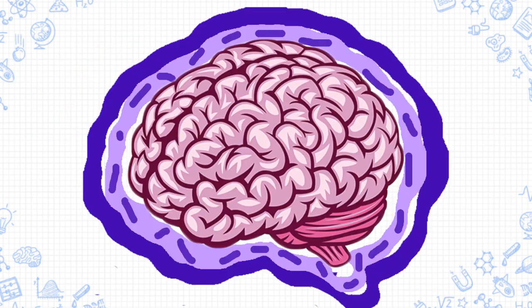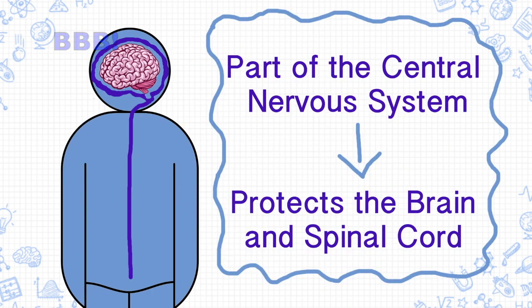Let's start with the blood-brain barrier, or as I like to call it, BBB. BBB is a part of the central nervous system and its job is to protect the brain and spinal cord.